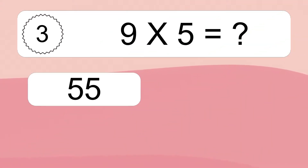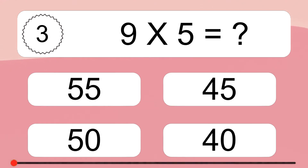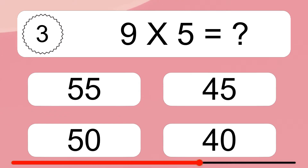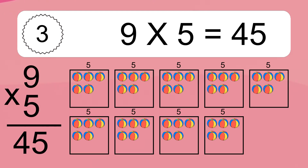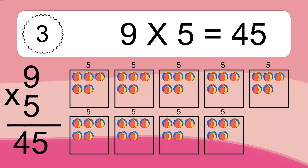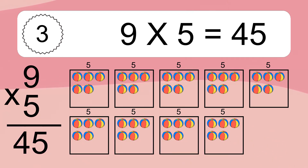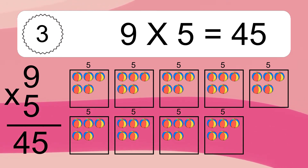Nine times five equals what? Nine times five equals 45. We have nine boxes, and each box has five colorful balls inside. If you count all the balls in all the boxes together, you will have nine times five balls. This equals 45 balls.